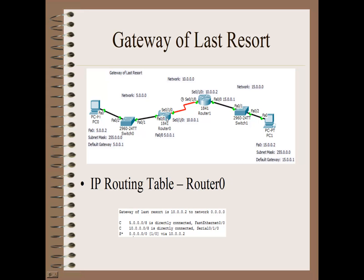Looking at the routing table on router 0 after setting that, we now have a gateway of last resort. Gateway of last resort is 10.0.0.2, which is the first port of the second router. All traffic will go to that port no matter what the IP addresses are. We can see the two directly connected networks - 5.0.0.0 and 10.0.0.0 - and now a new static route for all zeros that routes all traffic via that port.